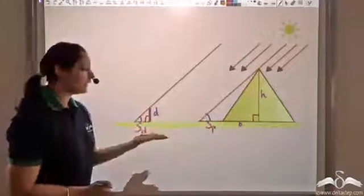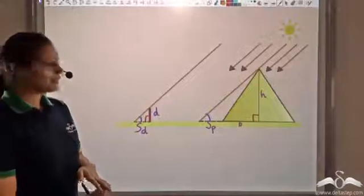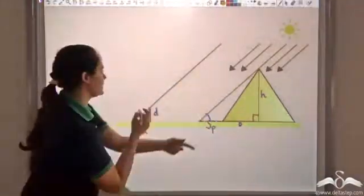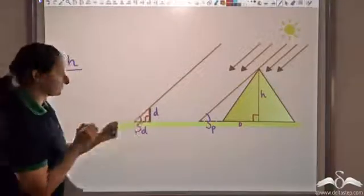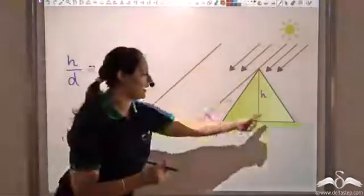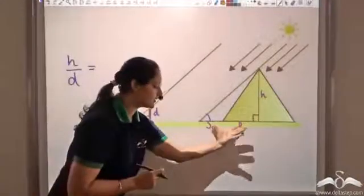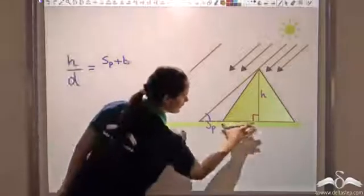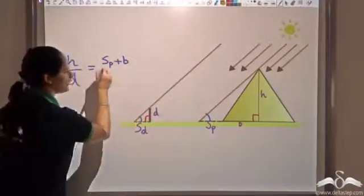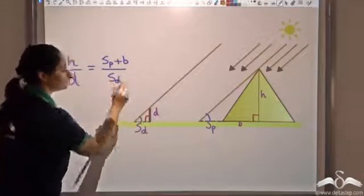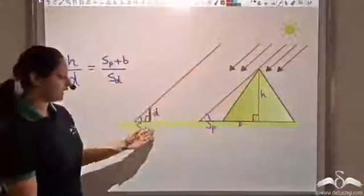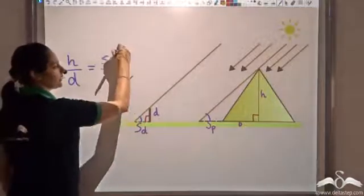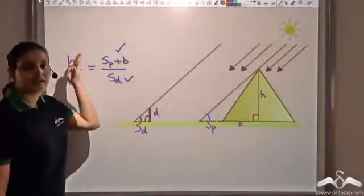Since the triangles are similar, the corresponding sides are also proportional. So I can write: H by D equals (SP + B) by SD. That is, height of the pyramid over length of the stick equals (shadow of pyramid plus half-base) over shadow of the stick. I want to find H; I know D, I know SD, and I know SP plus B. So easily using this proportion, we can find the height of the pyramid.